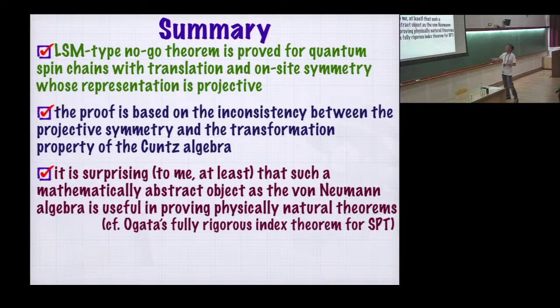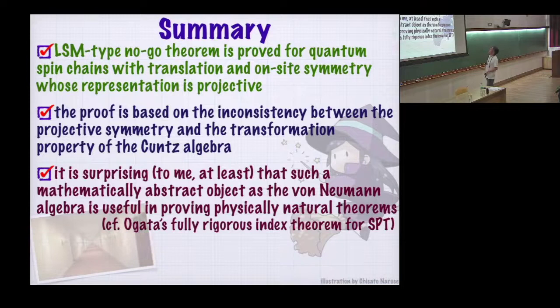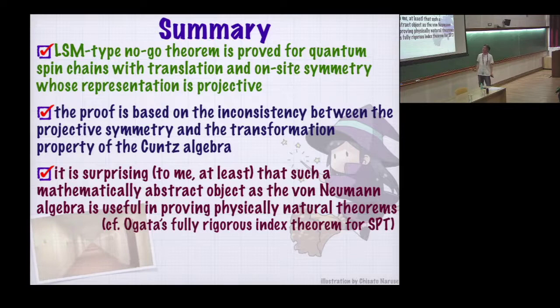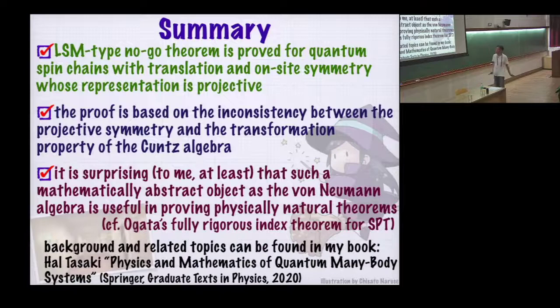This is my summary slide. The LSM type theorem is proved. The proof is based on inconsistency between the projective symmetry and the transformation part of the Cuntz algebra. It was surprising to me that such a sophisticated object as von Neumann algebra is used in this kind of physically natural theorem. Finally, I'm preparing a book that will come out soon from Springer. If you're interested in quantum spin chains and related topics, please take a look at it. Thank you very much for your attention.